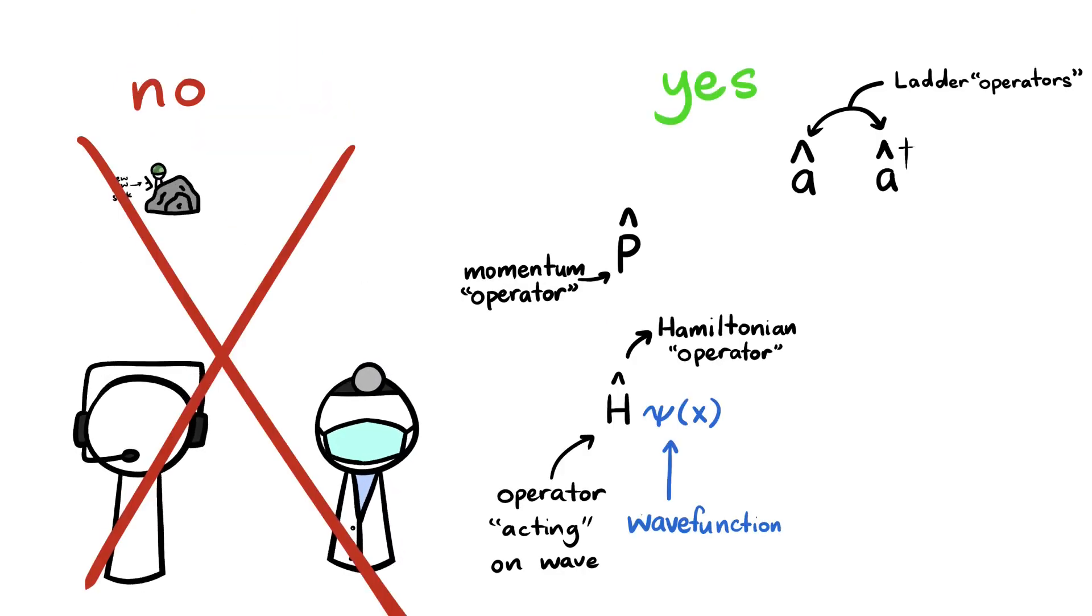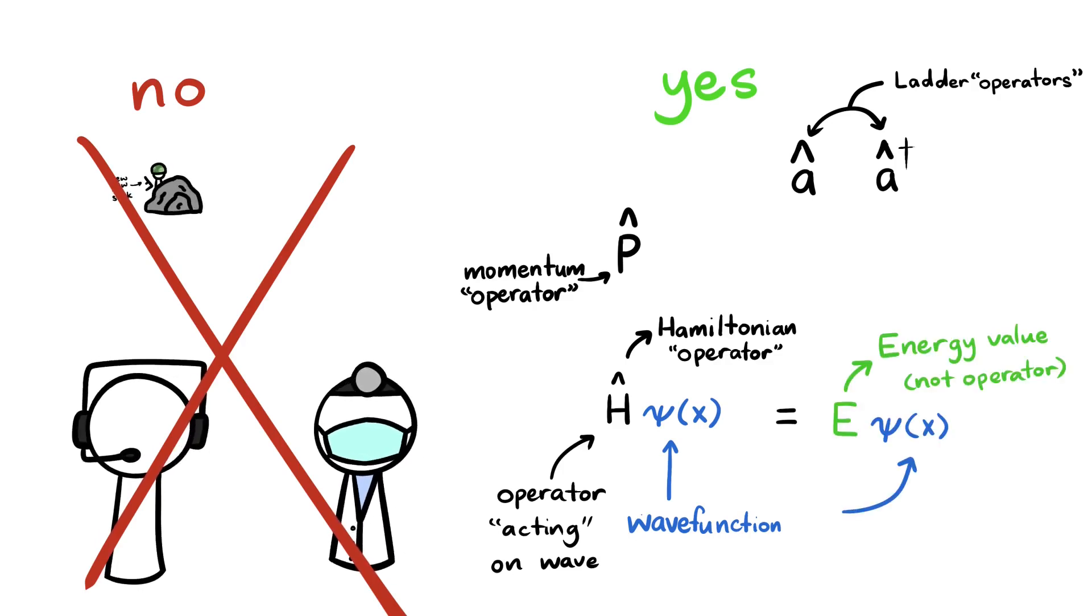In physics, operators are said to act on a wave function, which means they output the value we want to measure multiplied by the original wave function.